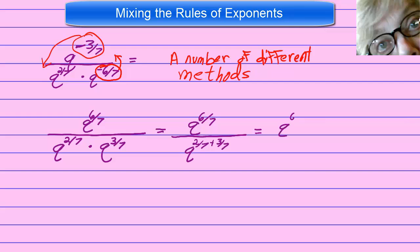So we'll have q to the six-sevenths over q to the five-sevenths.